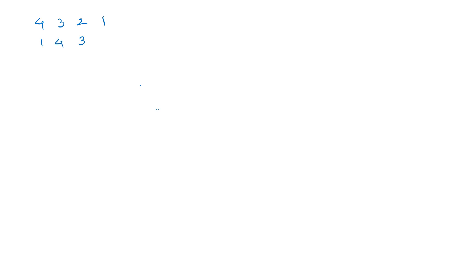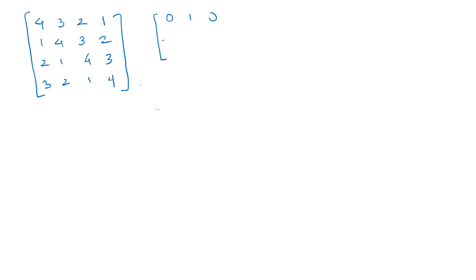I will explain fractionally strided convolution through an example. First we perform a convolution operation on a 4x4 image with entries: 4, 3, 2, 1 / 1, 4, 3, 2 / 1, 4, 3 and 3, 2, 1, 4. We take a 3x3 filter with entries: 0, 1, 0, -1, 2, -1, 0, 1, 0. This will lead to a 2x2 output matrix.